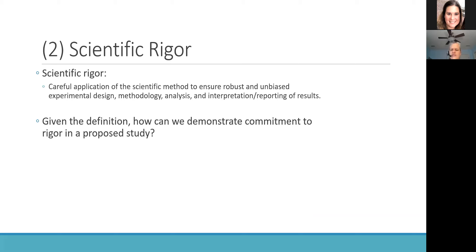Moving on to the second key aspect that the NIH highlights: the scientific rigor of the research proposed in the grant. Although we've just seen we can highlight these aspects of rigor when examining the rigor of the prior research, there's certainly an expectation that in the approach section of our grant, we're going to describe how the experiments undertaken will demonstrate a clear and careful application of the scientific method to ensure robust and unbiased findings. This includes describing the experimental design, methodology, statistical analysis, and how we're going to interpret and report results.